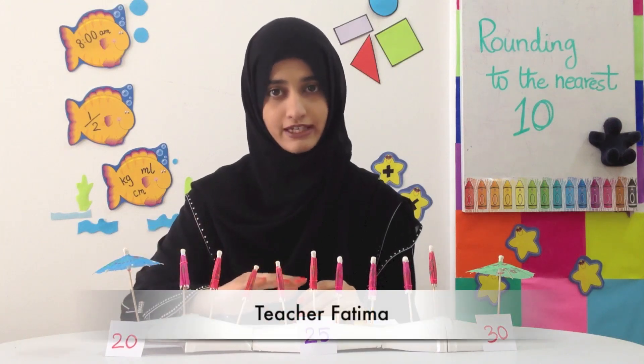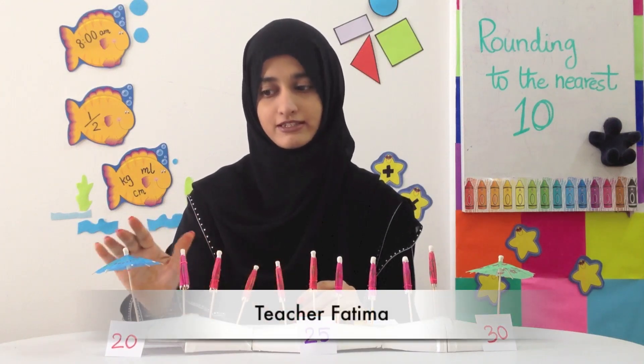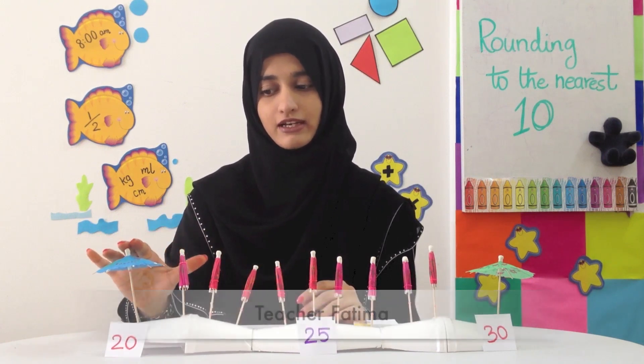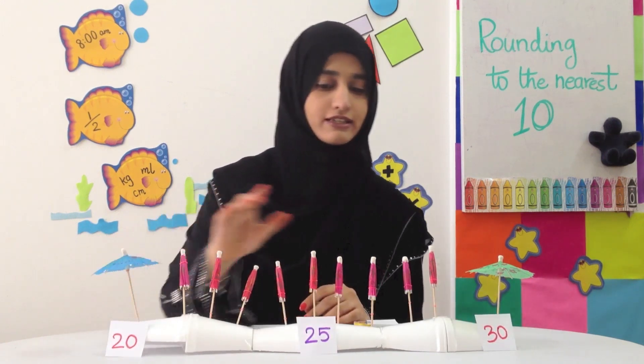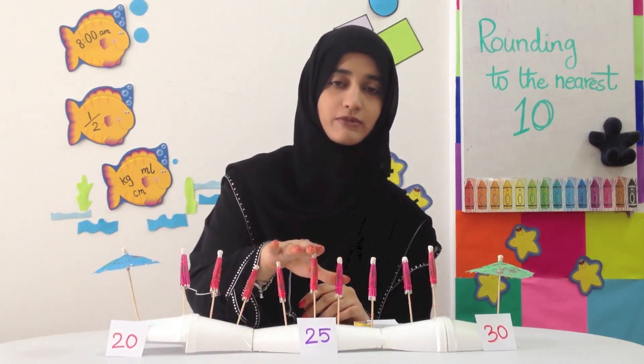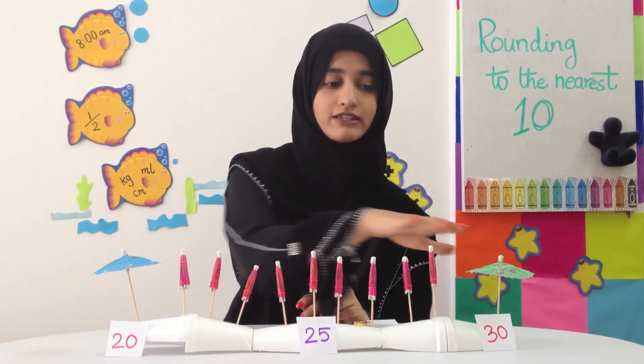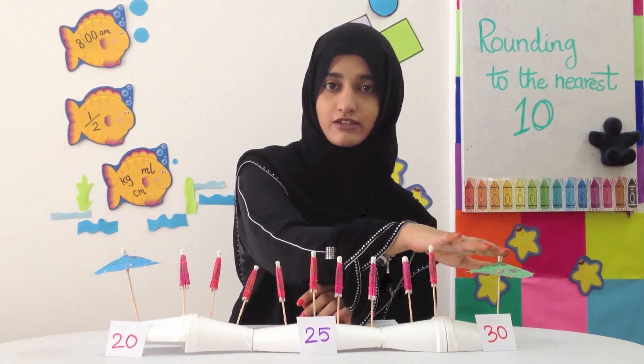Here we have a number 9. We have umbrellas. This umbrella has a number 20 on it, this umbrella is number 25, and this one is 30.